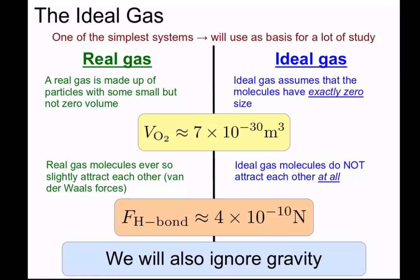Similarly the force of the hydrogen bond is something in the neighborhood of 10 to the minus 10 newtons which is again very small force. So the idea that ideal gas molecules don't attract each other at all is not a terrible approximation.